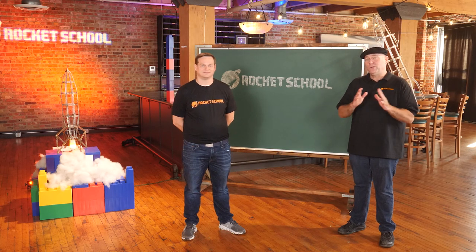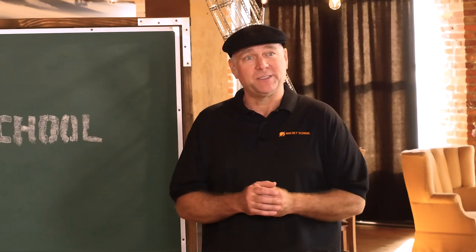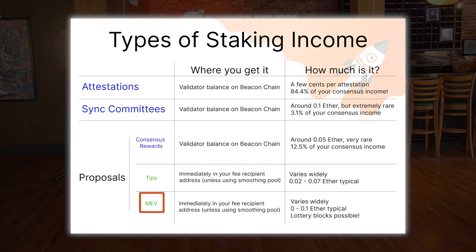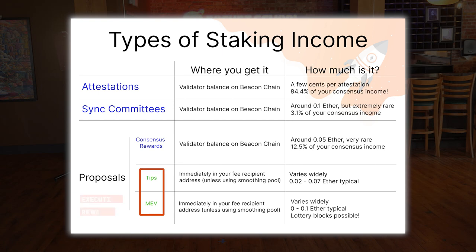Consensus rewards are only one part of the income a staker can expect. Whenever a validator proposes a block — which happens randomly but on average several times a year per validator — its operator can also expect to be paid tips, also known as priority fees, by each of the transactions in their chosen block. They may also receive payments for MEV, which we will talk more about later. Together, these tips and MEV make up a staker's so-called execution rewards.